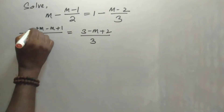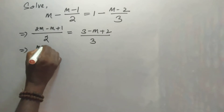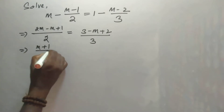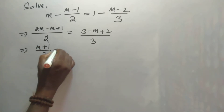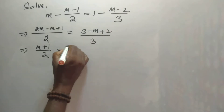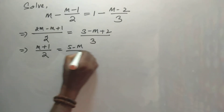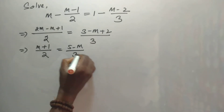Then it is 2m minus m, which gives m plus 1 by 2 is equal to 5 minus m by 3.